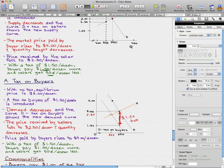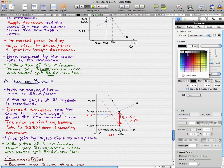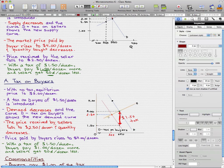The demand decreases, and the curve D minus tax on buyers shows the new demand curve. The price received by sellers falls to $2.50 per dozen, and the quantity decreases. We'll draw a line here. $2.50 per dozen, and the quantity decreases.